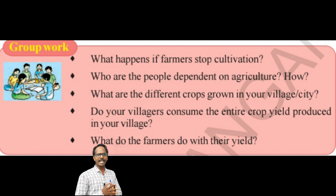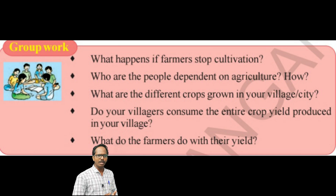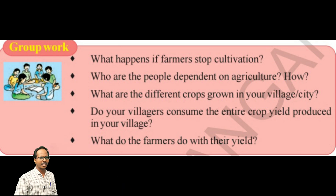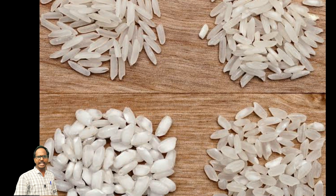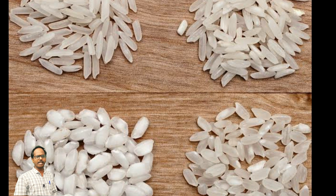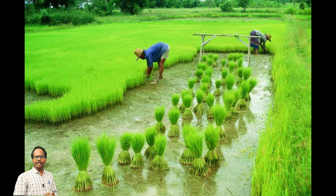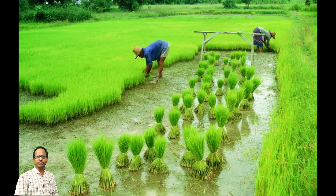Think — what would happen if farmers stopped cultivation? If farmers stop growing crops, the food sources will not be available. People and animals will die because of starvation. We all get food because of farmers growing crops. People living in villages and cities depend on farmers for their food needs. People in cities can get the required food items because farmers are growing crops and sending them to cities.